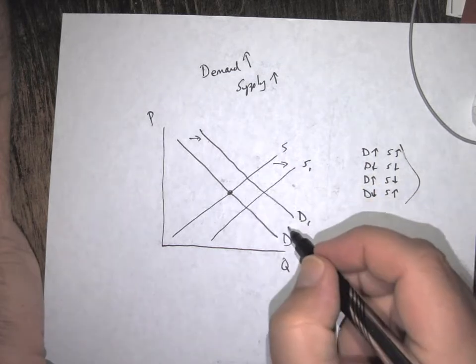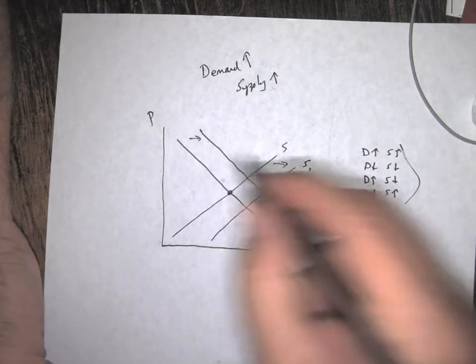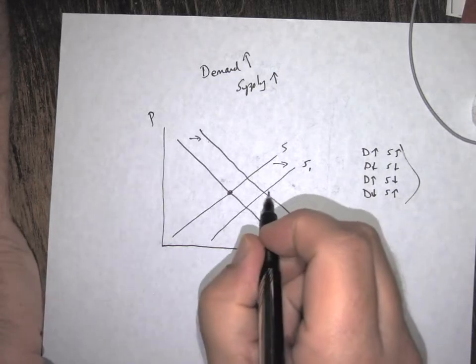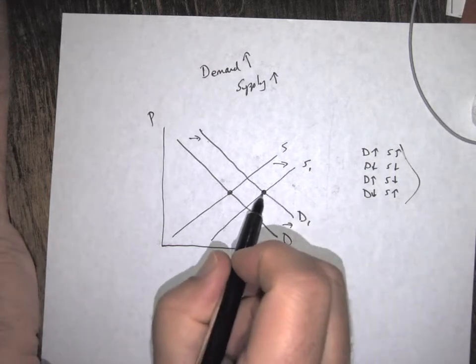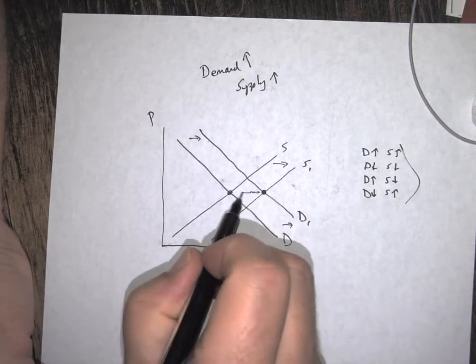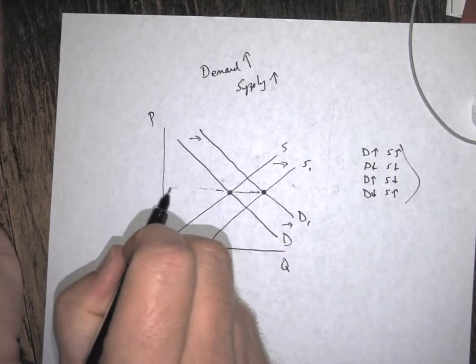going from D to D1. Now I can put my arrow over here wherever the matter. So now where demand and supply cross, that is equilibrium. So our equilibrium price, look how it goes almost straight through the old one.